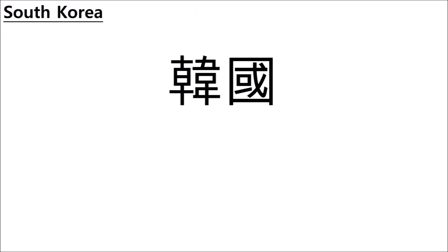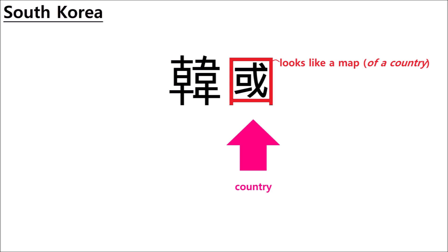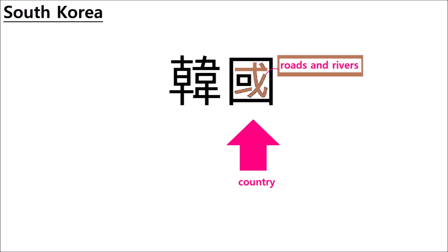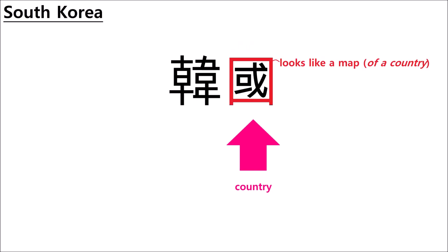Let's start with South Korea. It looks like this. This part is the symbol for country — we're going to see this one a lot today. I think it kind of looks like a map, and that's how I remember that it means country. The big square is the paper and all those little lines are like roads and rivers. That is a lake. This is what I do when I'm trying to learn Hanja: I try to turn the character into a picture that relates to the word it represents. So this one is a map of a country.